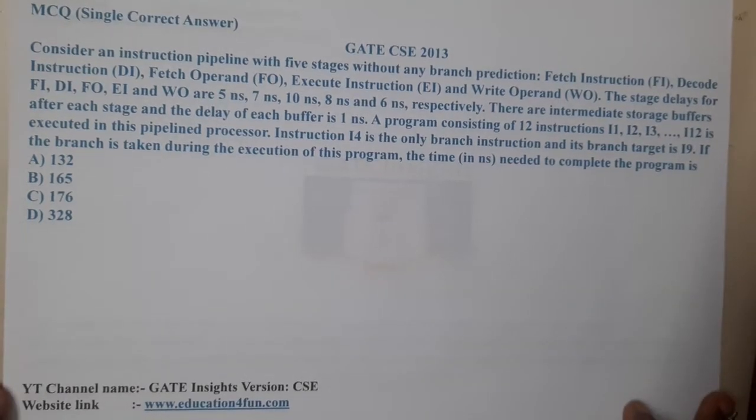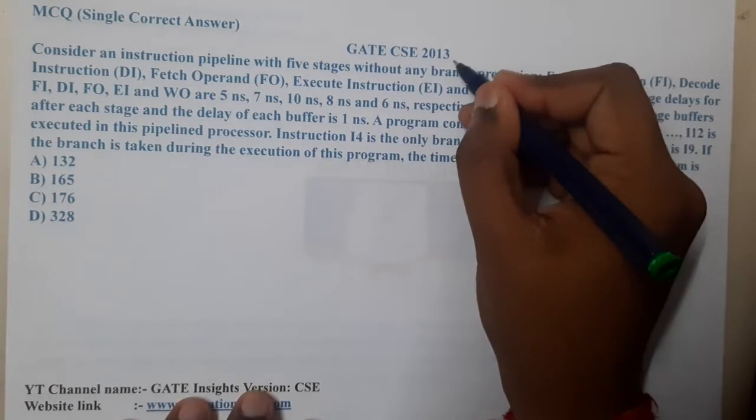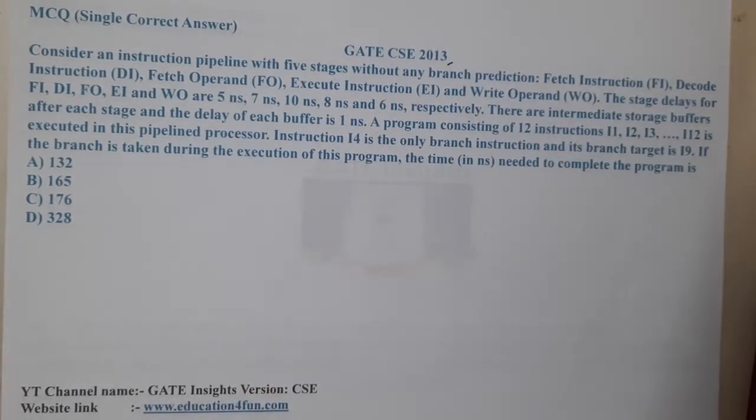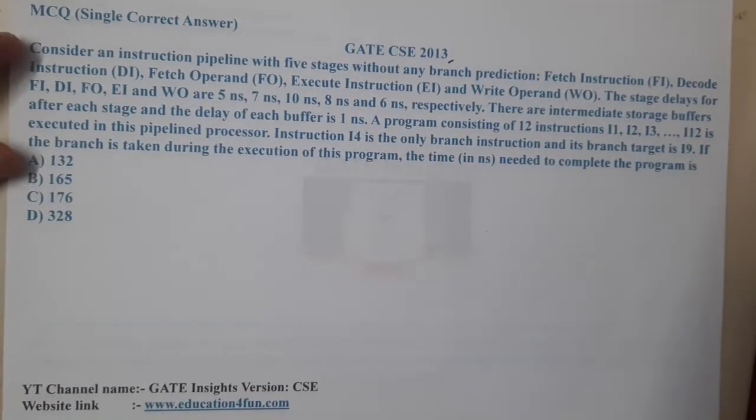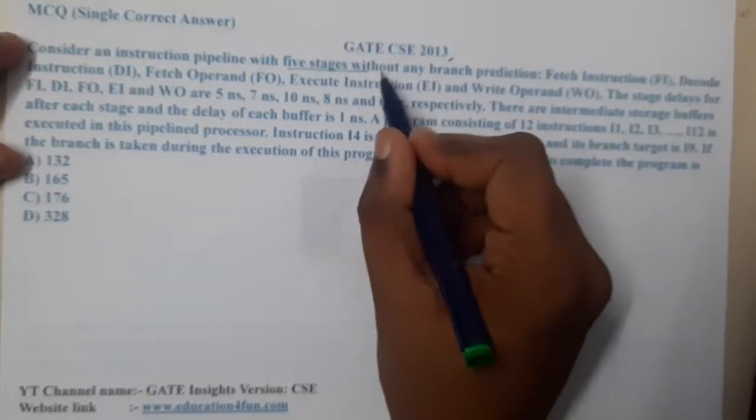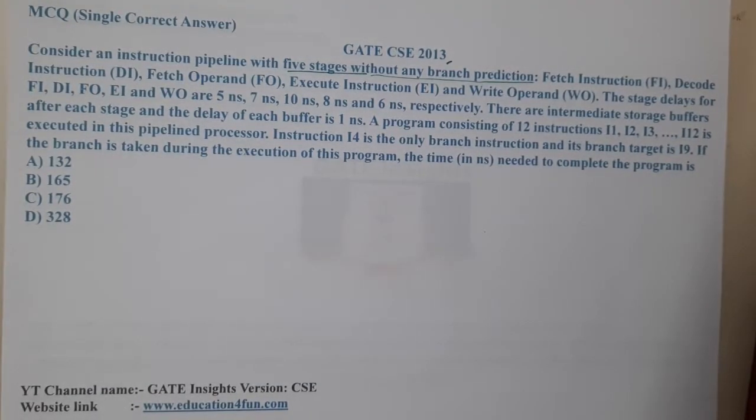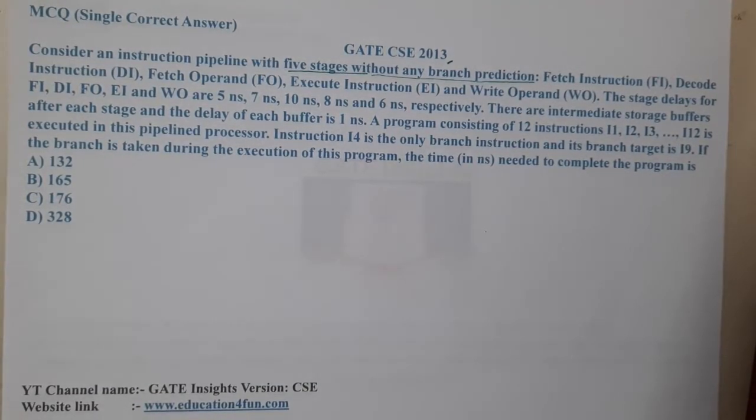Hello guys, we are back with our next lecture. In this lecture, let us go through the next question. This question belongs to GATE CSE 2013. The question is: consider an instruction pipeline with five different stages without any branch prediction. This question belongs to control hazards.